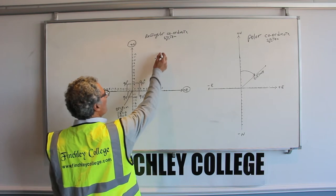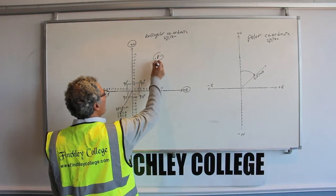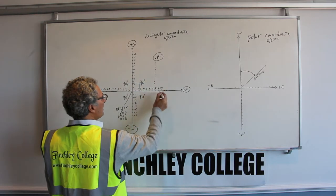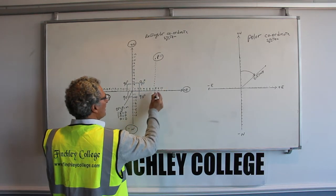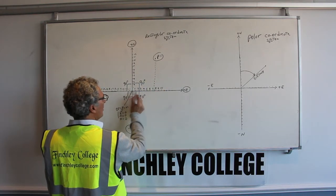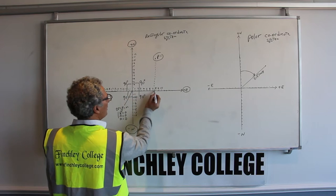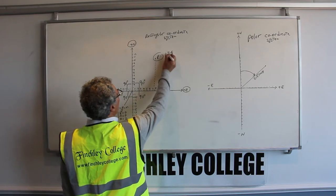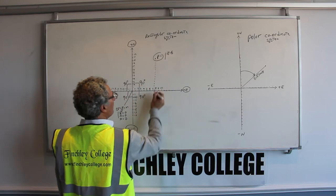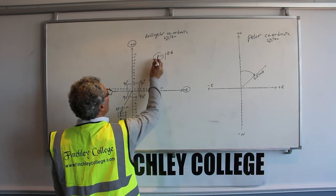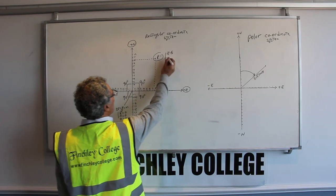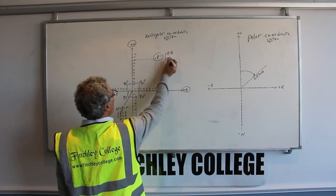So if you have a point here, for example point P1, the easting — if you draw a right-angle line to the easting axis — is the dimension from the origin to this point, and at this point the easting is plus 7.5 meters. And the northing, if I draw a right angle to the north axis, is 10 meters.